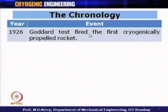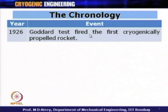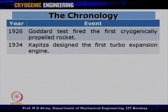In 1926, Goddard test-fired the first cryogenically propelled rocket using gasoline as fuel and liquid oxygen as oxidizer — unlike modern cryogenic engines that use liquid hydrogen and liquid oxygen. In 1934, Kapitza — another major name in cryogenic engineering — used a turbo-expansion engine for the first time to liquefy gas without pre-cooling, which became a major development for commercial liquefiers.